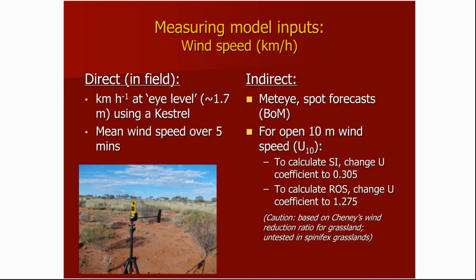A key note: the model is developed on 1.7-metre wind speeds. Forecasts are given for standard open 10-metre wind speed. So to use forecast wind speeds you need to change the coefficients — the spread index coefficient and the rate-of-spread wind speed coefficient. These wind speed ratio reductions are based on Cheney's grassland work. I haven't actually tested or validated Cheney's grassland wind speed reduction ratios for spinifex grasslands specifically, but I suspect they'll be fairly similar. That's a job for me to do down the track — get some 10-metre towers out and measure the wind speed reduction.